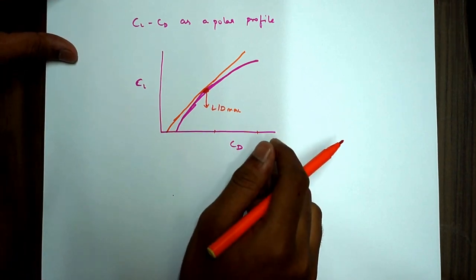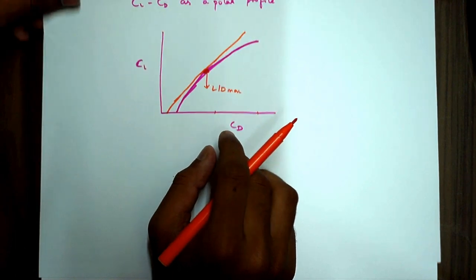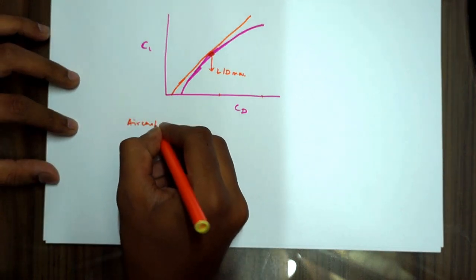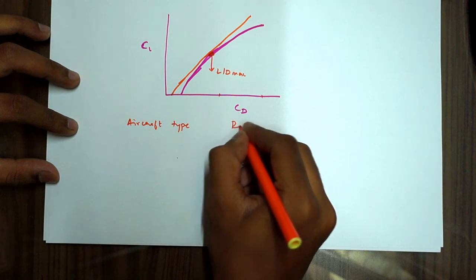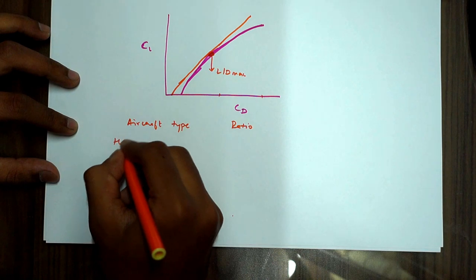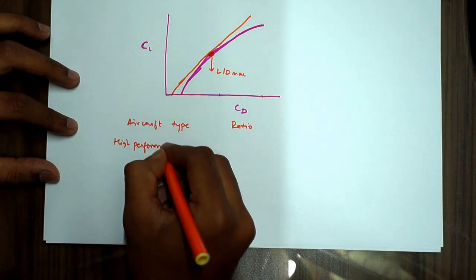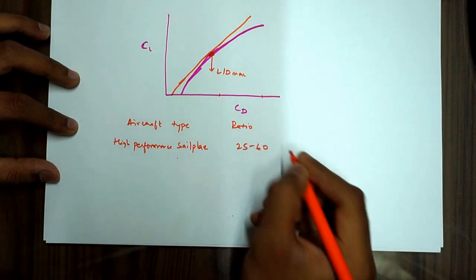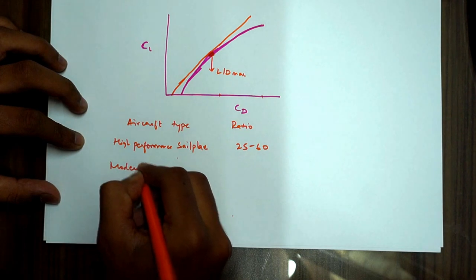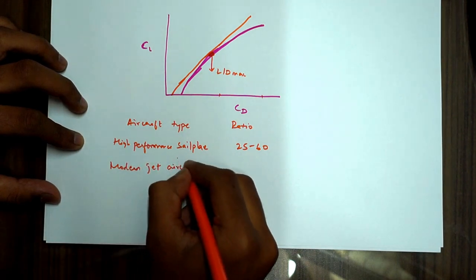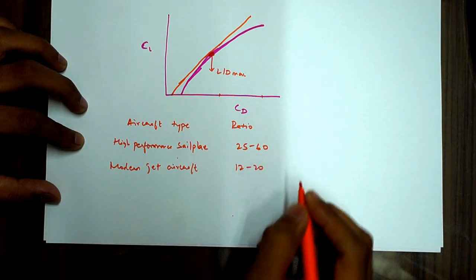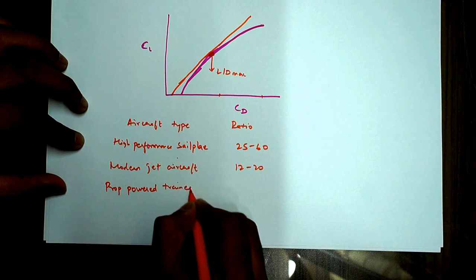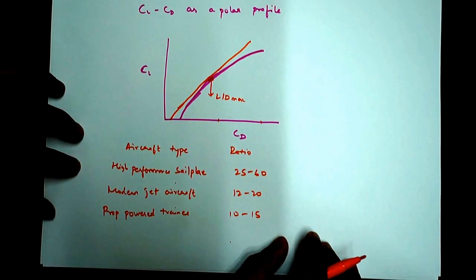So now we will discuss few normal ratios that are prevalent for the aircraft types. So here they are aircraft type and ratios, typical ratios. So for a high performance sail plane, the ratio is almost 25 to 60. And modern jet aircraft have L by D almost around 12 to 20. And the prop trainer, prop powered trainer is around about 10 to 15.